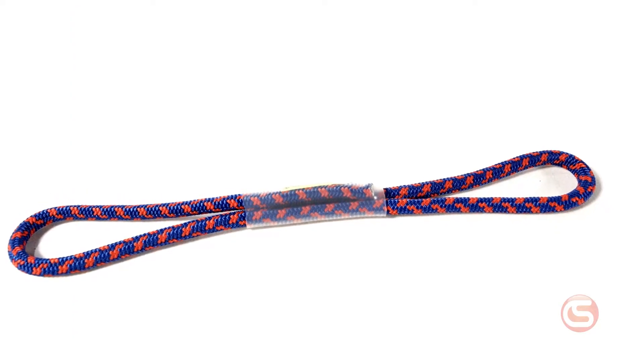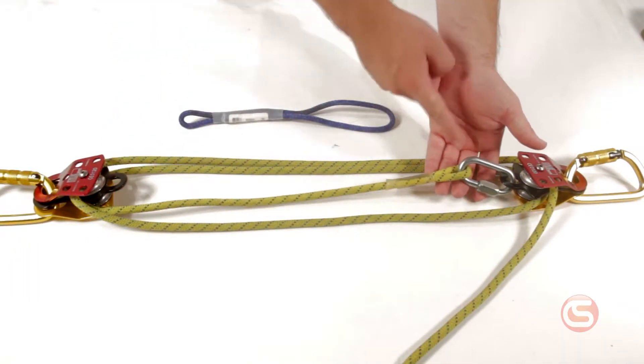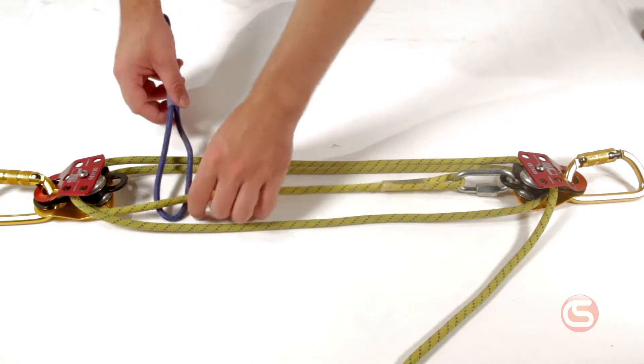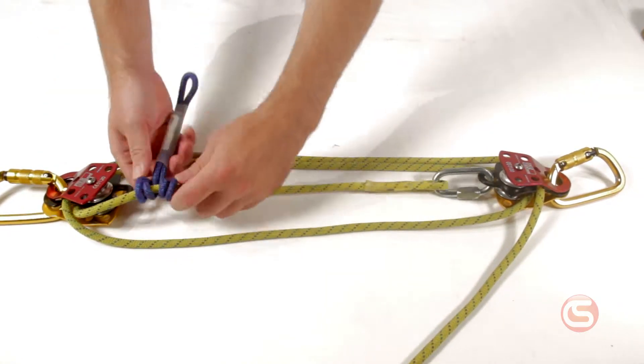A prusik acts like a fist on the haul rope, and quickly chokes down on it when it's being pulled on. So now you want to find the anchor rope on the system. It's the one with the terminated eye connected to the quick link. Follow that up to the opposite pulley, and this is where we'll attach the prusik.